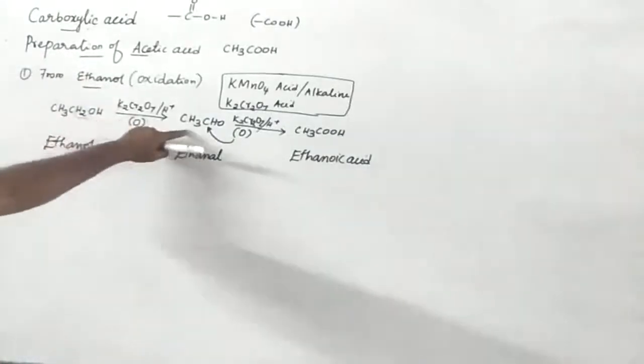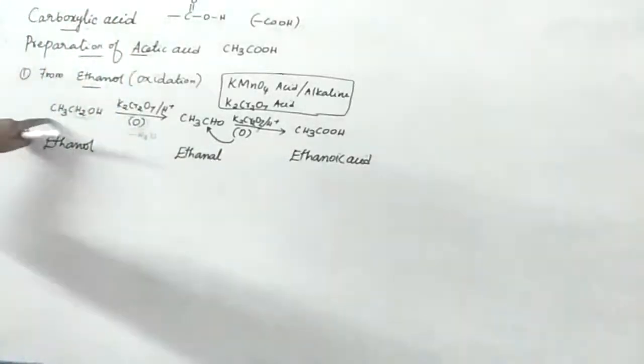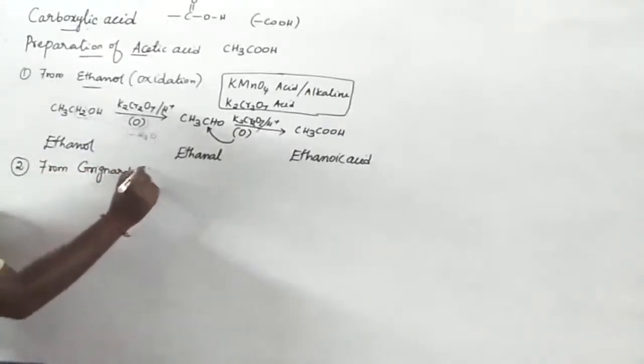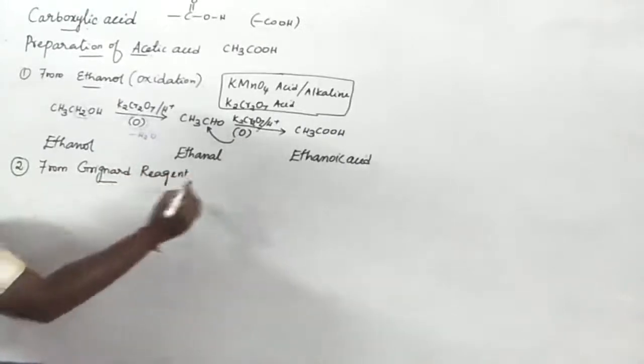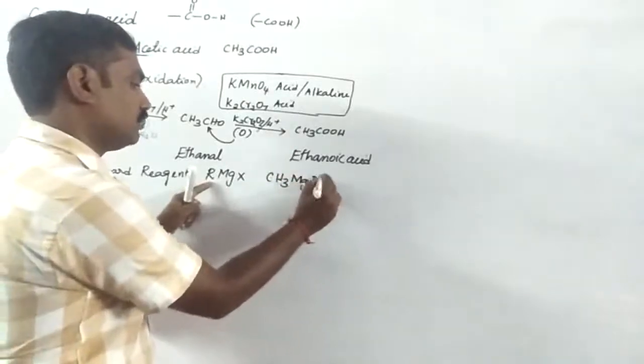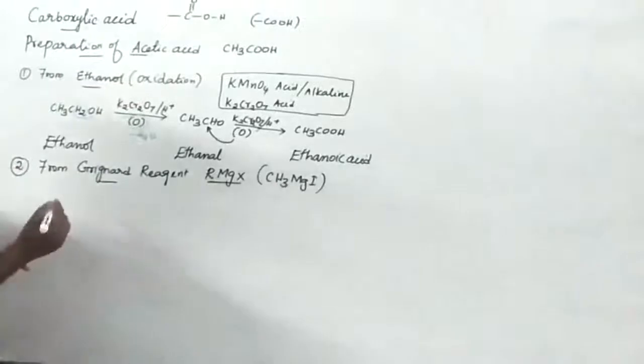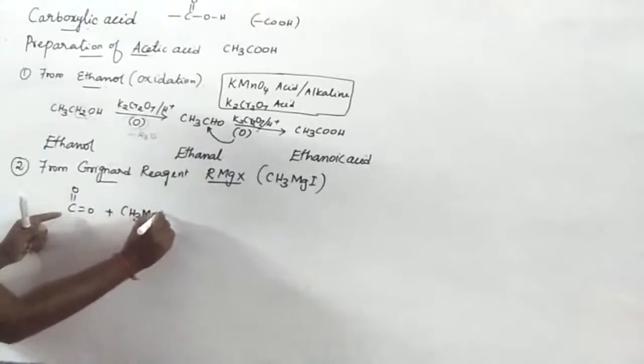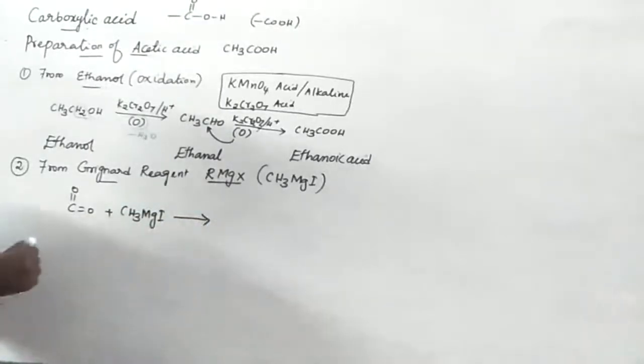So preparation of acetic acid - if there are suppose we take methanol it forms formaldehyde, formaldehyde forms formic acid. Okay, you prepare acetic acid we take ethanol. Second, from Grignard reagent, from Grignard reagent or MgX. Take example methylmagnesium iodide, methylmagnesium iodide from Grignard reagent.